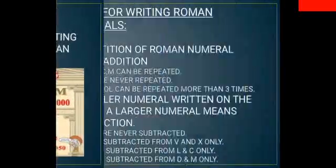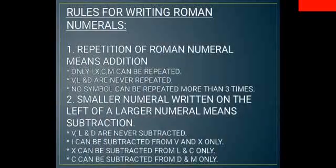The repetition of Roman numerals means addition. This means if two like I plus I means two, X plus X means double X means 20, C and C means 200 and so on. Therefore only I, X, C, M can be repeated.